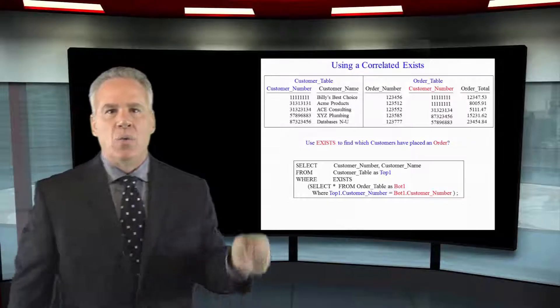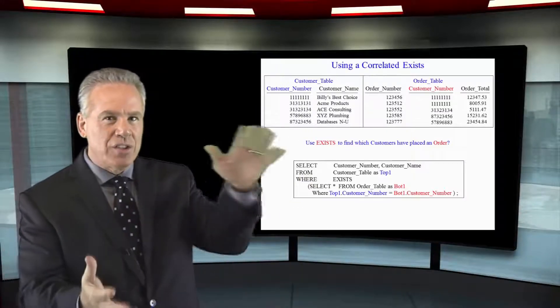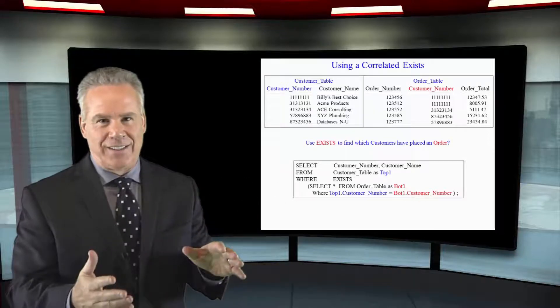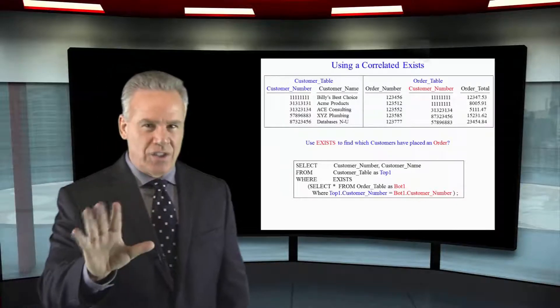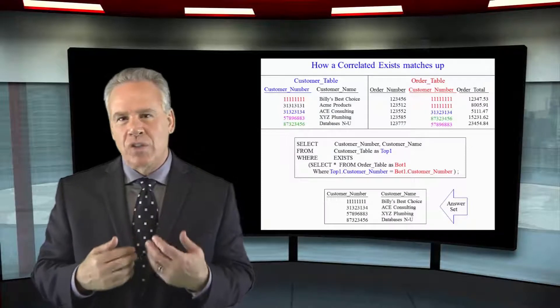where top one dot customer number equals bottom one dot customer number. This is a correlated exists. What's interesting about EXISTS that's different than a subquery is that most of the time we're seeing in a subquery where customer number in, select customer number.